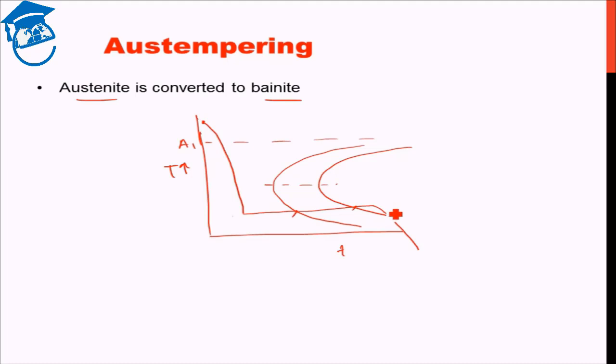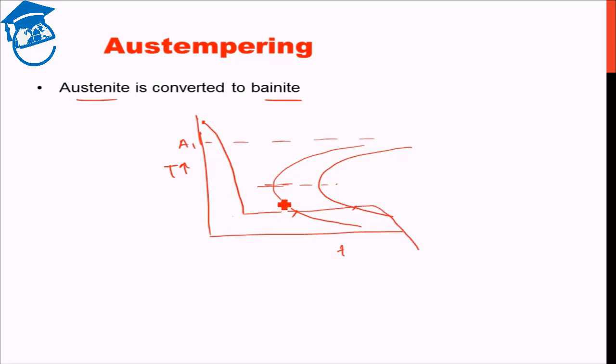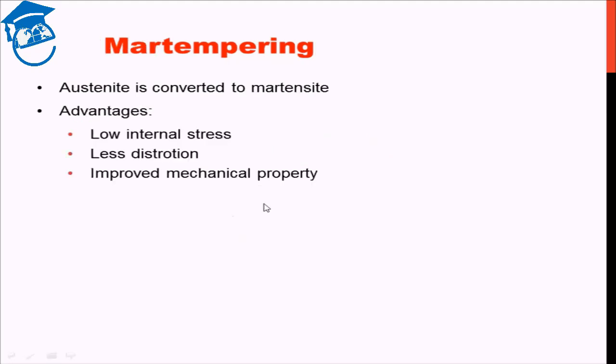Now depending on whether we keep the temperature high or low, obviously it has to be below the nose, we will get either very fine bainitic structure or coarse bainitic structure. Similar to austempering which gives us bainitic structure, we have something known as martempering. Martempering as the name suggests gives us martensitic structure.